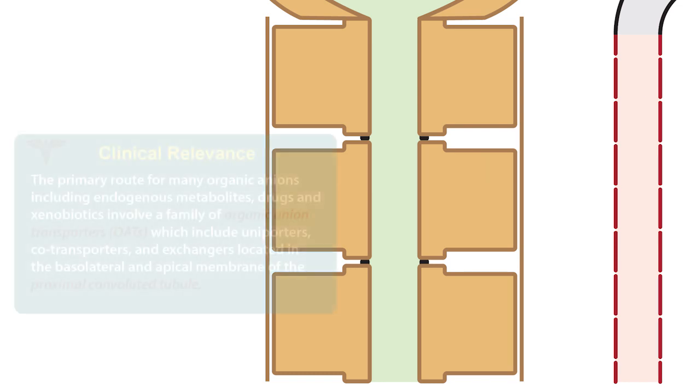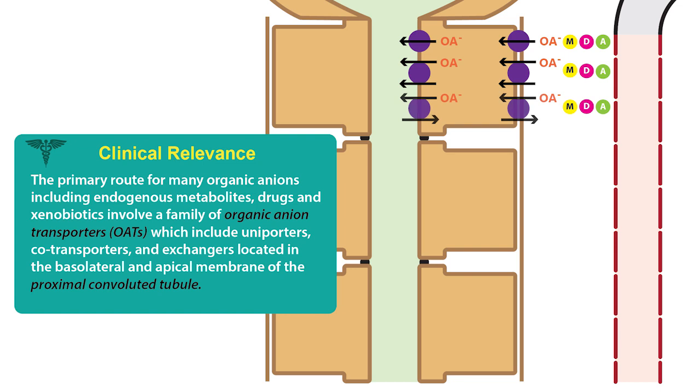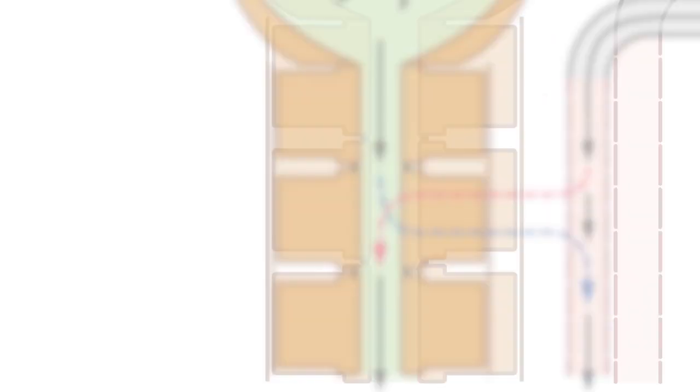The primary route for many organic anions, including endogenous metabolites, drugs, and antibiotics, involve a family of organic anion transporters, which include uniporters, cotransporters, and exchangers located in the basolateral and apical membrane of primarily the proximal tubule.